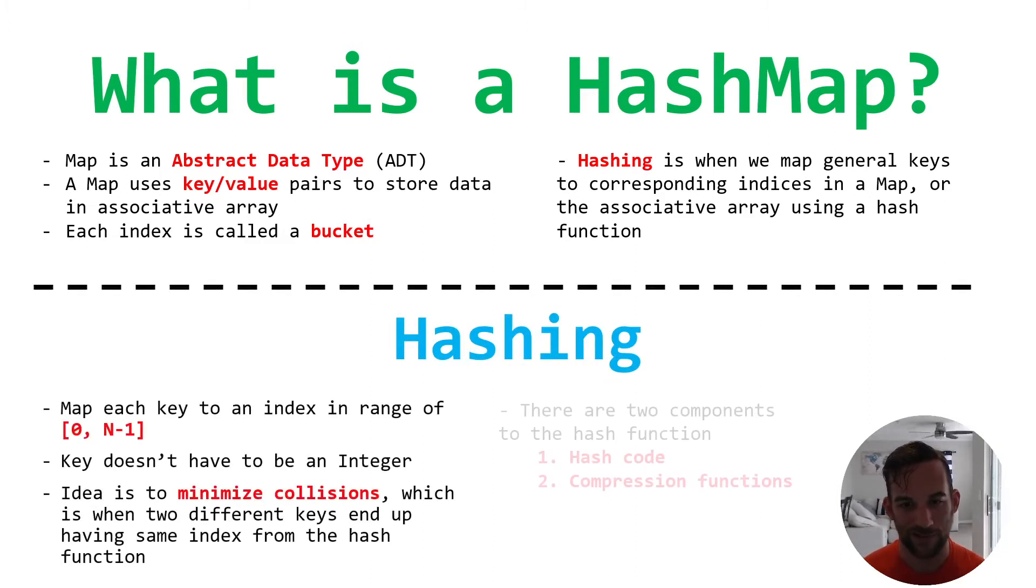So hashing. Now in a map, because it's an array in the background, that means it's a finite size, right? So it goes from zero to n minus one, where n is the size of the array.